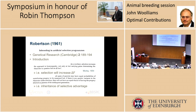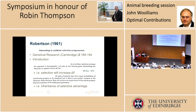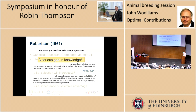Another idea coming back to inheritance of selective advantage: all pairs of parents may have equal probabilities of contributing progeny to be measured, but some are more equal than others when it comes to selection. What Robertson was pointing out is that we have a very serious gap in knowledge — we don't know anything about the rate of inbreeding that we would have in selected populations. That was in 1961.